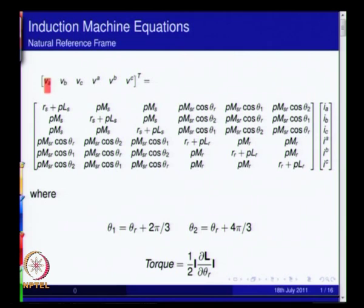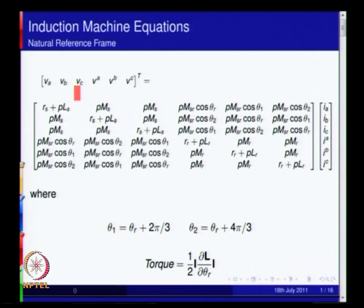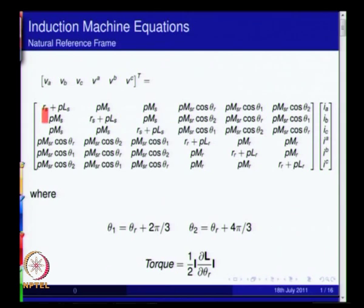We started out with the induction machine equations in the natural reference frame: VA, VB, VC of the stator and VA, VB, VC of the rotor. In our notation, a, b and c mentioned as superscripts refer to the rotor, while a, b and c in the subscript region refer to the stator. All electrical variables V and I will have subscripts for stator variables and superscripts for rotor variables. For resistances and inductances, the subscript s refers to the stator whereas the subscript r refers to the rotor.